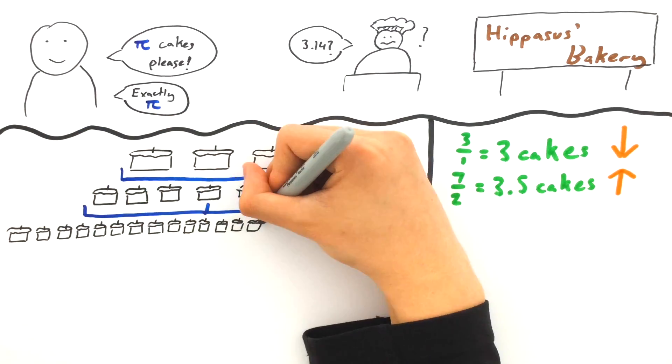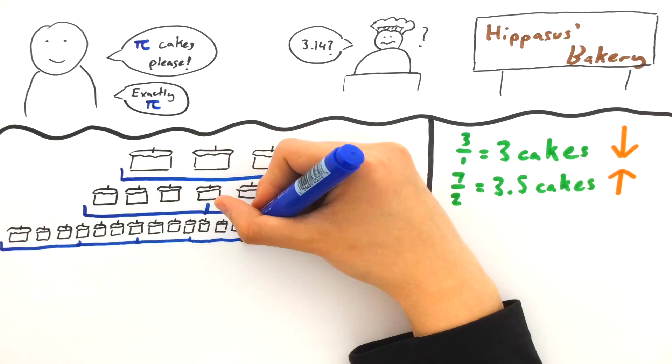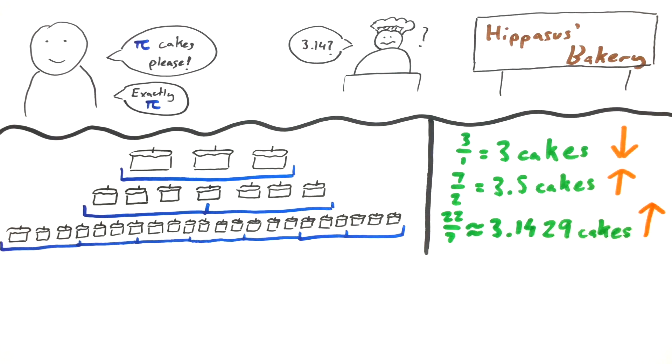He could take out 22 cakes, cut them into seven groups, and give me one of those groups, but that would still be a little bit too much.